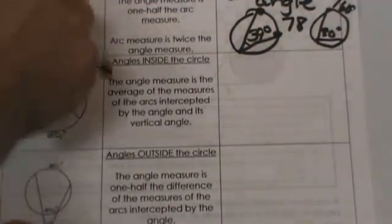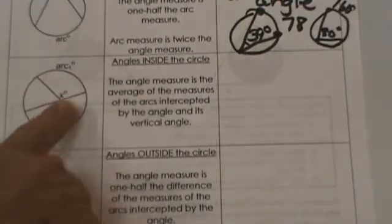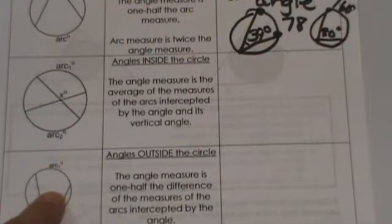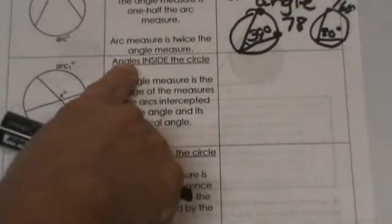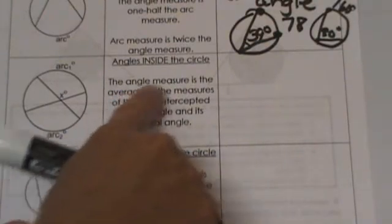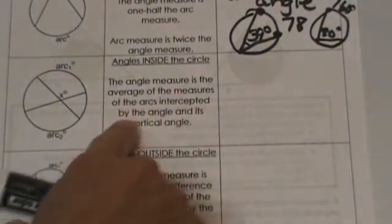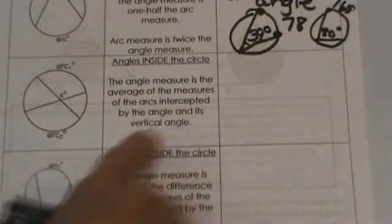We can't use the central angle one from up here at the top. What we are going to do is look at the angles that are inside the circle. The angle measure is the average of the measure of the intercepted arcs by the angle and its vertical angles.